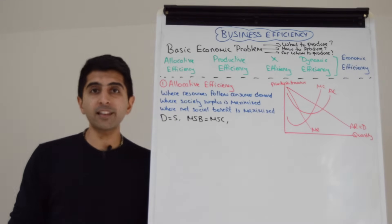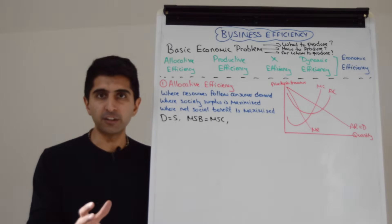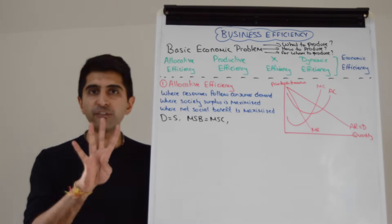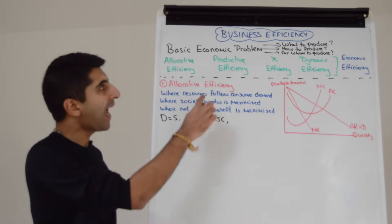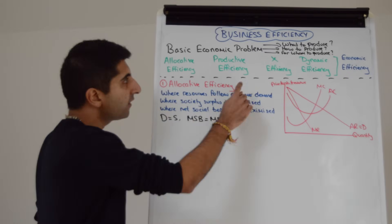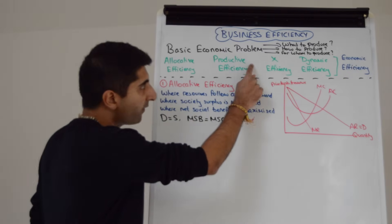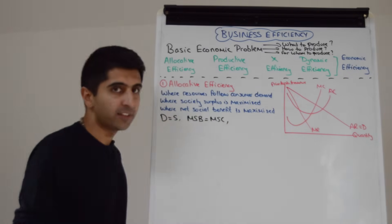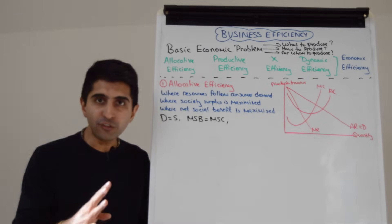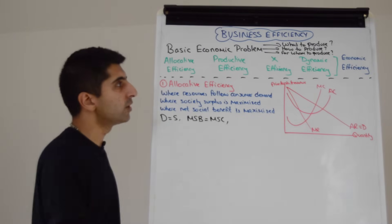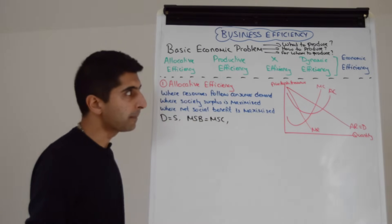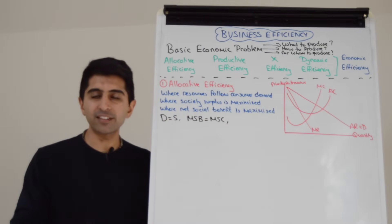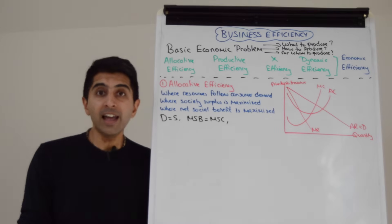So we need to study in economics: are businesses efficient? When we answer that question, there are four efficiencies we need to look at — allocative efficiency, productive efficiency, X efficiency, and dynamic efficiency. These four constitute economic efficiency, and we need to know, in a business sense, where do all of these occur?